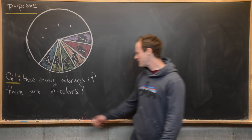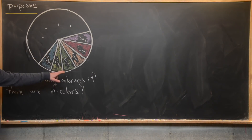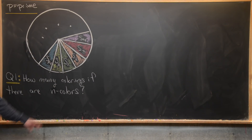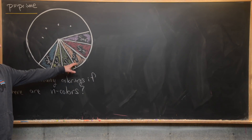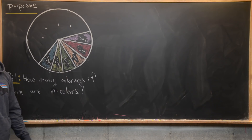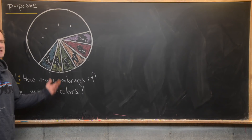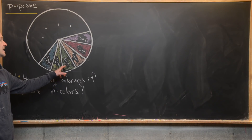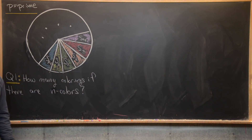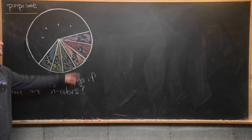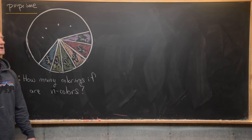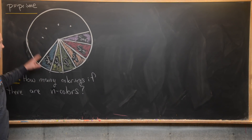Let's think about sector one — there are n choices. Now sector two — there are still n choices. Notice I haven't put any rules on whether adjacent sectors can or cannot have the same coloring. Then sector three, there are still n choices. All the way up to sector P, there are n choices.